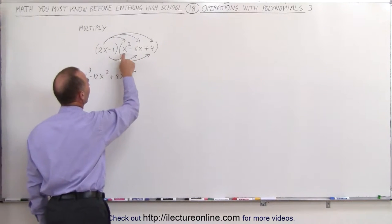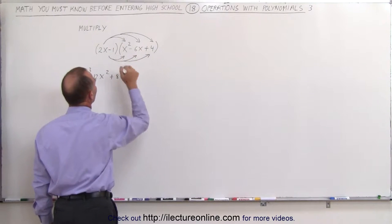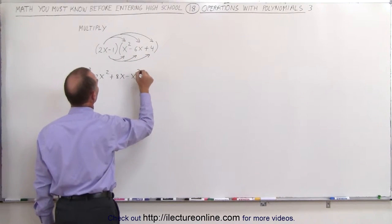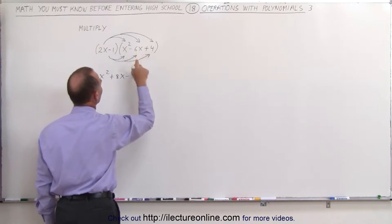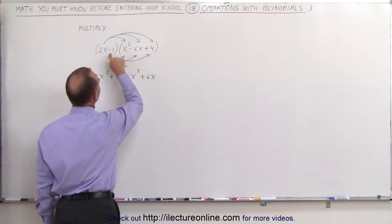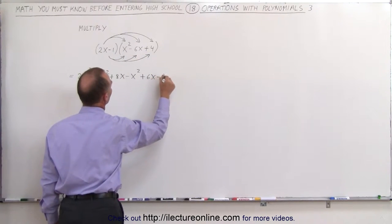Now we multiply the negative 1 times each term here. So negative 1 times this gives us negative x squared. Negative 1 times negative 6x gives us plus 6x. And negative 1 times plus 4 gives us minus 4.